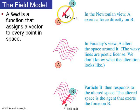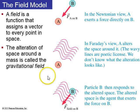So in the Newtonian view, if you have particle B, particle A exerts a force on particle B. But in Faraday's view, what happens is particle A, which is like the source, alters the space around it somehow. And then particle B, in that space, responds to the altered space. And so the field exerts this force on B.